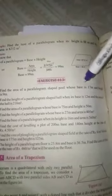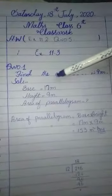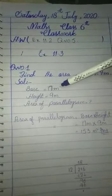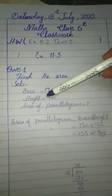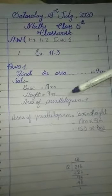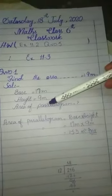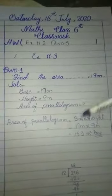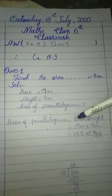Question number 1: Find the area of a parallelogram-shaped pool where base is 17 meters and height is 9 meters. It is a very easy exercise. Base is equal to 17 meters, height is equal to 9 meters. Area of parallelogram is equal to base multiplied by height.